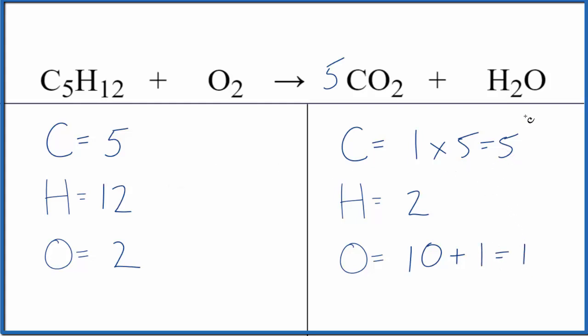Let's balance the hydrogens now. We have two. We need twelve. Coefficient of six. Two times six. That'll give us twelve. Hydrogens are balanced.